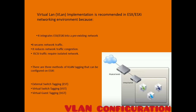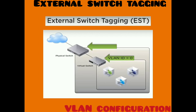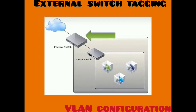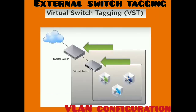The three methods are: External Switch Tagging (EST), Virtual Switch Tagging (VST), and Virtual Guest Tagging (VGT). Starting with EST — all VLAN tagging of packets is performed on the physical switch, and the ESXi host network is connected to the access port on the physical switch. The port group connected to the virtual switch must have its VLAN ID set to zero.